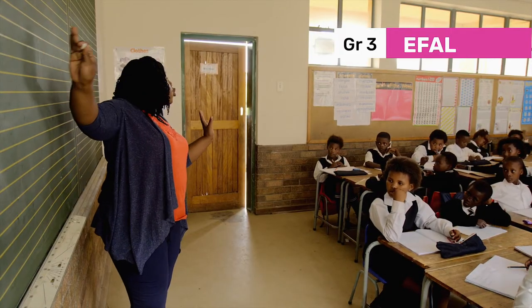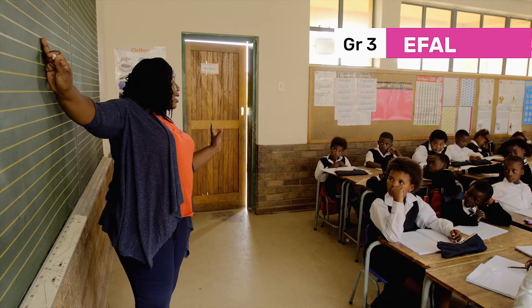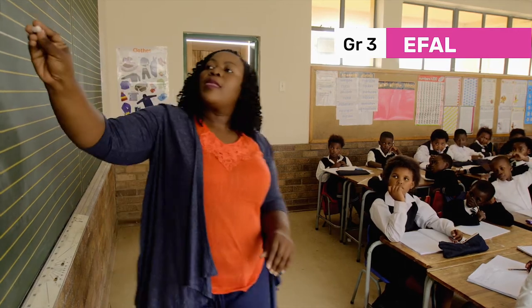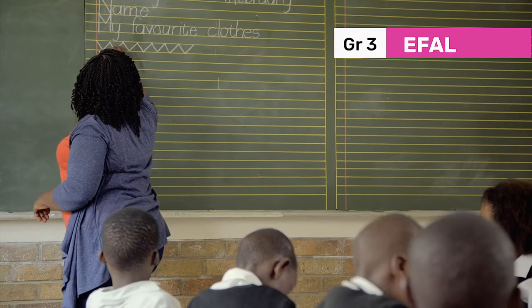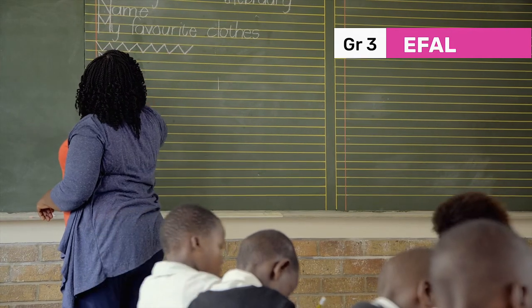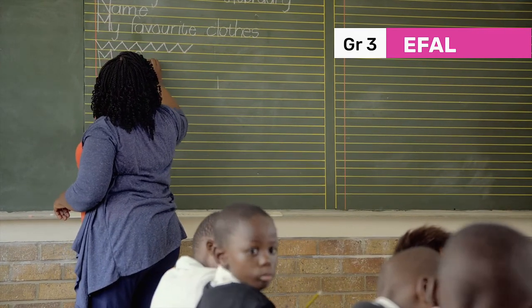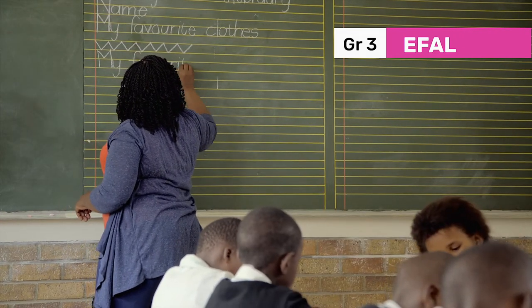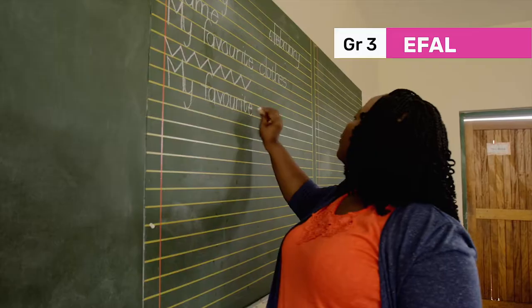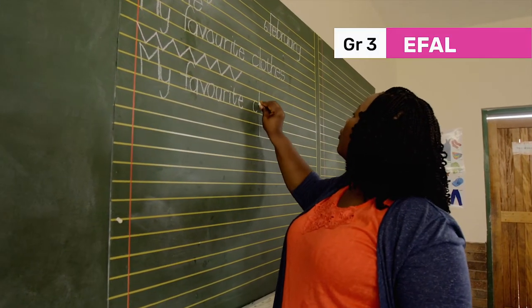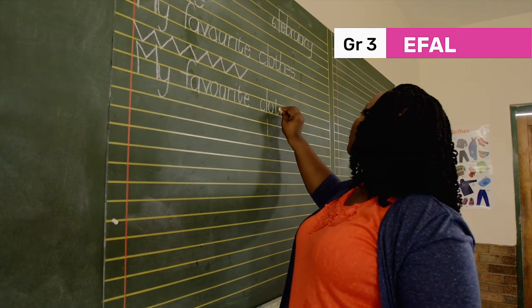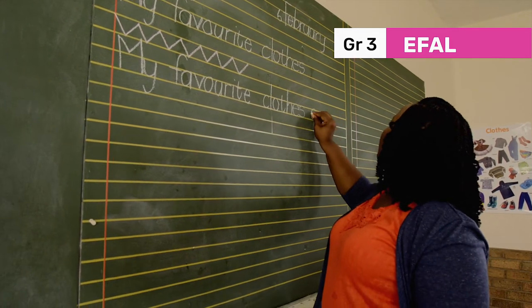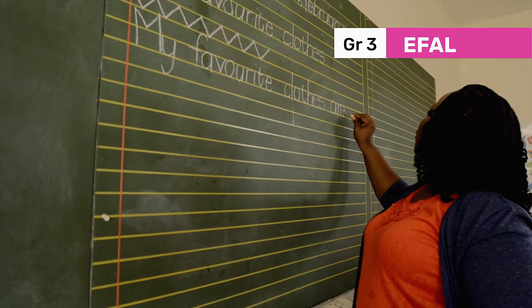I'll write the sentence starter — my favourite clothes are — down for you on the board.